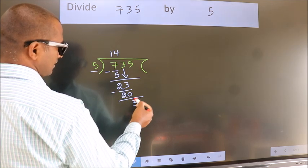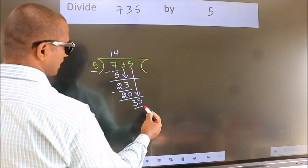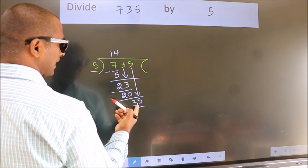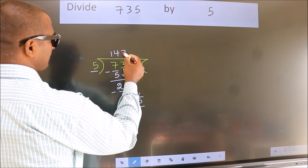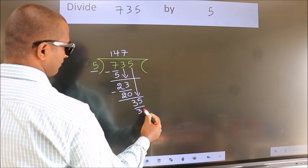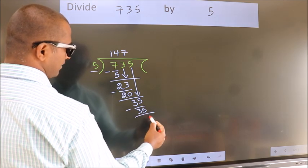After this, bring down the beside number. So 5 down, so 35. When do we get 35 in the 5 table? 5 sevens is 35. Now we subtract. We get 0.